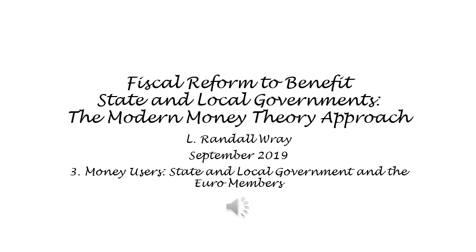By contrast, the Eurozone's central fiscal authority is the European Parliament, whose budget is less than 1% of the Eurozone's GDP. Further, that budget is contributed by members, so it is not net spending. While it is distributed on a progressive basis with low-income member states receiving relatively larger shares, it is a small drop in the bucket. U.S. transfers are relatively larger and are not constrained by revenues, as the federal government can and does run large deficits.